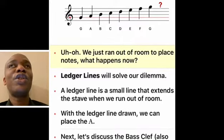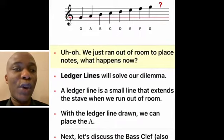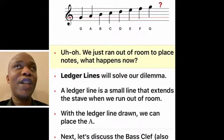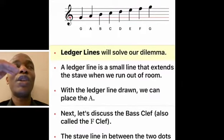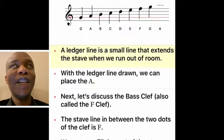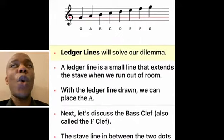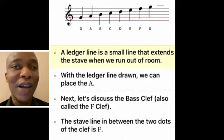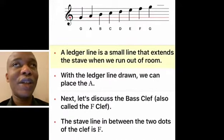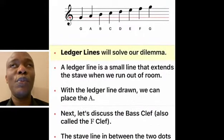Now if we continue the process by adding notes on line, space, line, space, you come to a point where you run out of lines and spaces. Now if you add any line above a staff or below a staff, that line is called a ledger line. A ledger line extends a staff above or below.